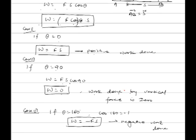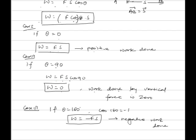If the angle between the force and displacement is 90 degrees, then work done by the force is 0, meaning work done by all vertical forces is always 0. Case 3: If θ equals 180 degrees, cos 180 equals minus 1, so work done equals minus F into S, which is negative work done.